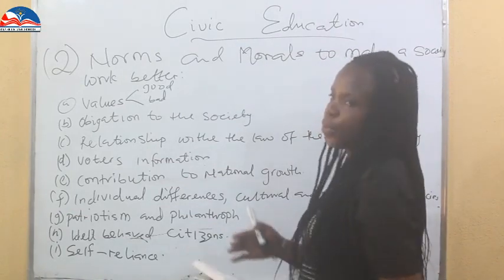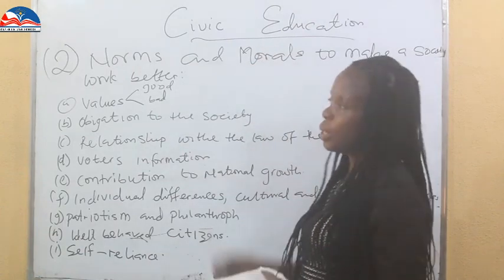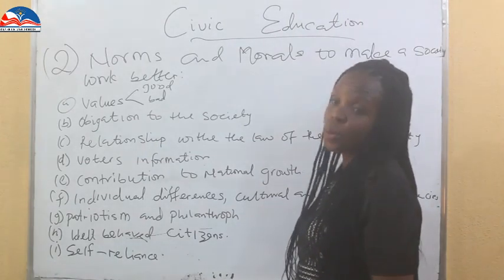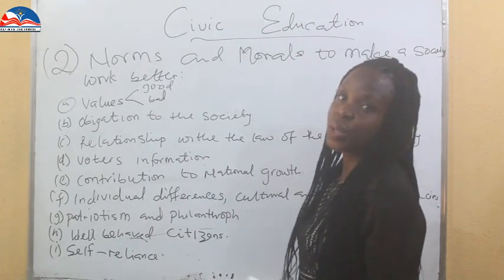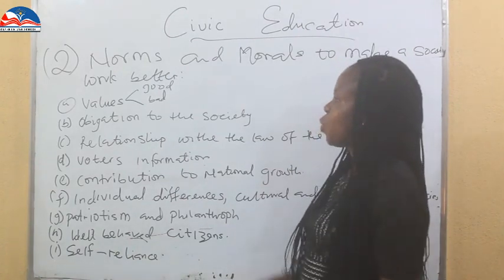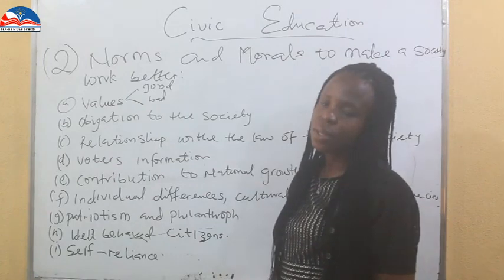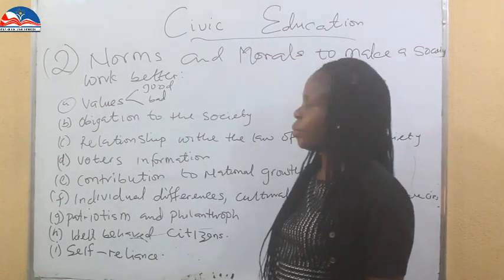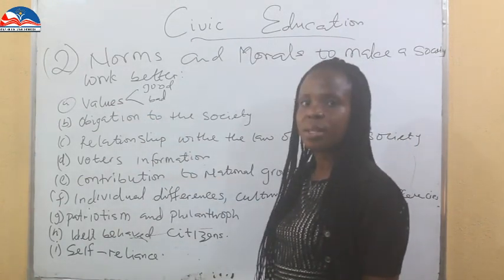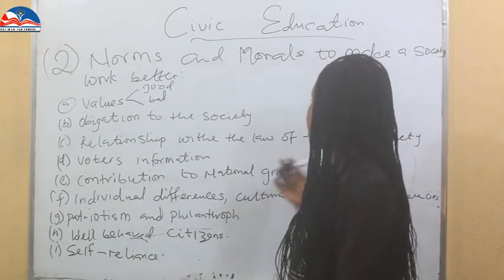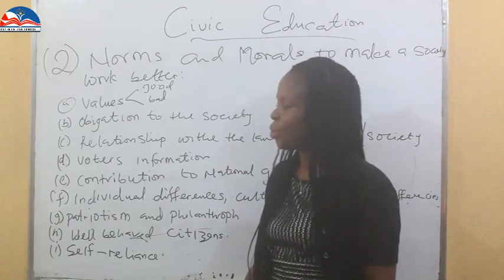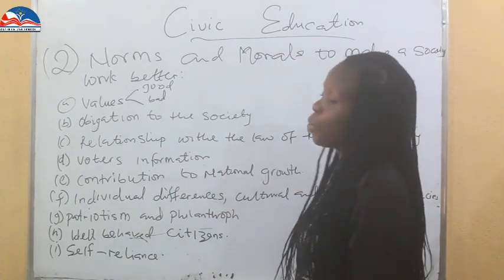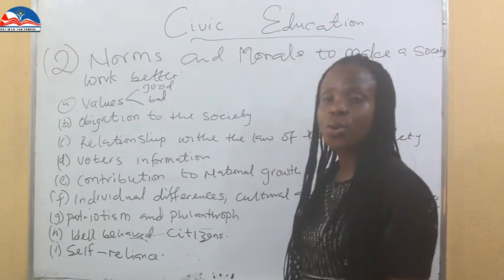Now we want to see some norms and morals to make a society work better. We have a number of them here — the list is not exhaustive, but we're going to take these: values, obligation to the society, relationship with the law of the land or the society or the nation, the law of the government, voters information, contribution to national groups, individual differences, cultural and religious differences, patriotism, well-behaved citizens, and self-reliance.